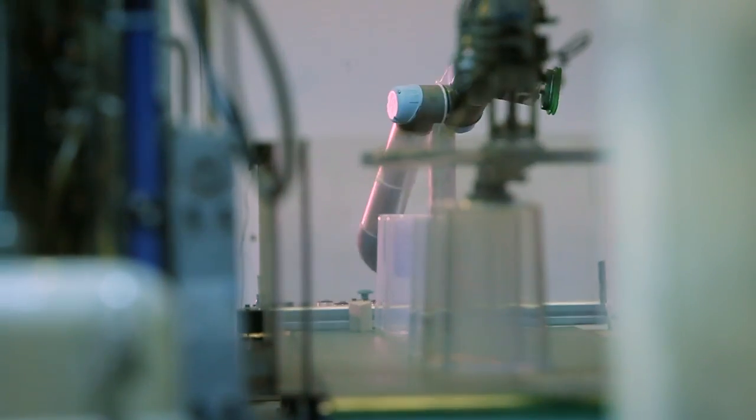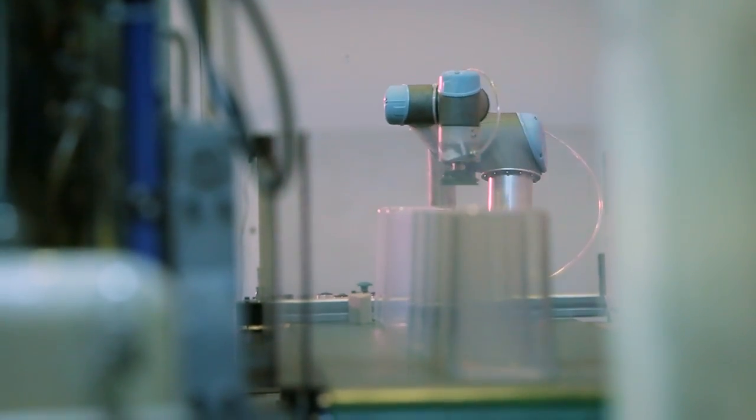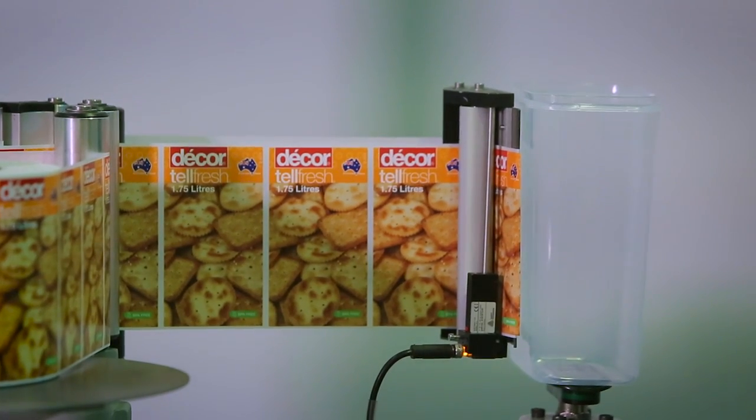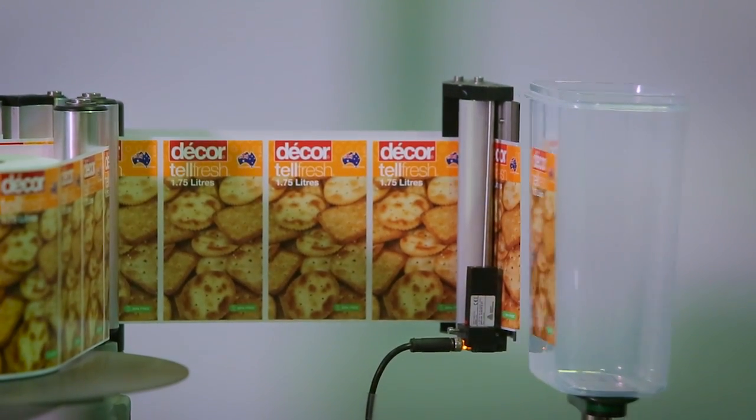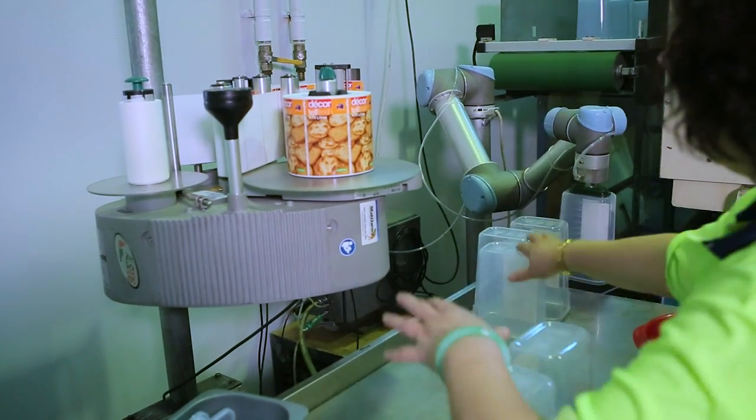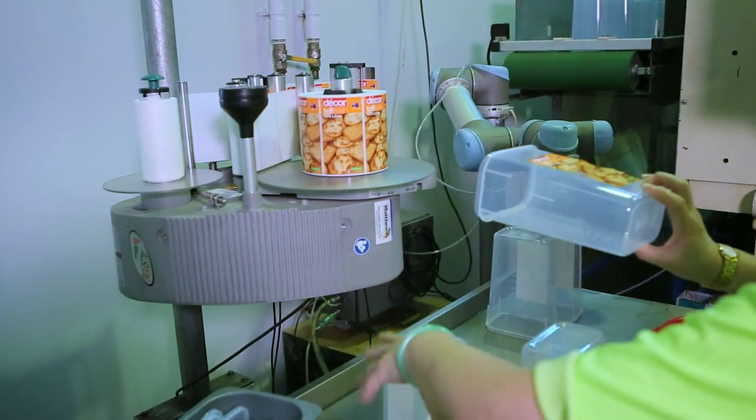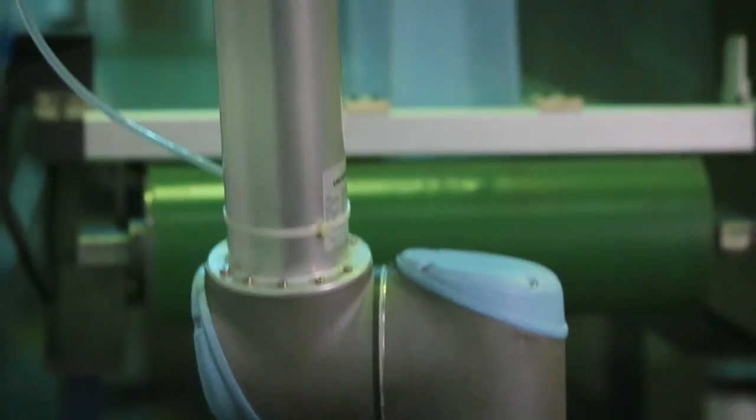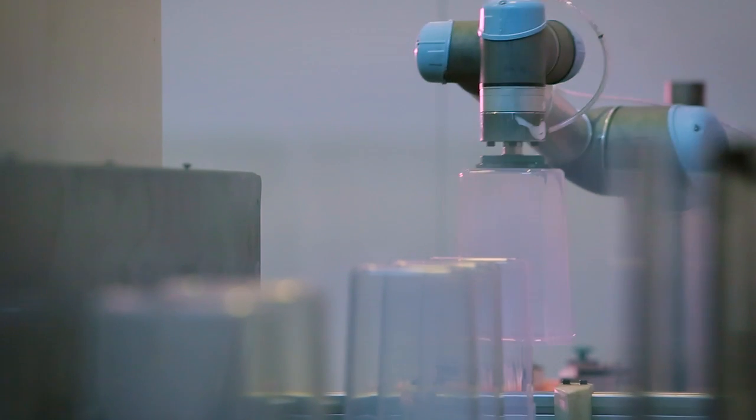The UR5 has been a huge selling point for Prism Industries, showing the company is ahead of its competitors when it comes to implementing automated solutions. The UR5 has been a real point of difference for us. Our customers really enjoy coming in and seeing it operating. It's led to a lot of new business. It shows that even a medium-sized business like ours can be on the forefront of technology.